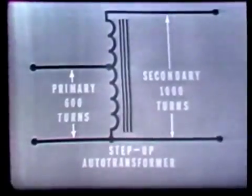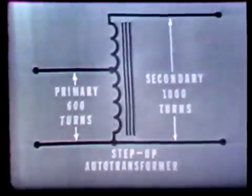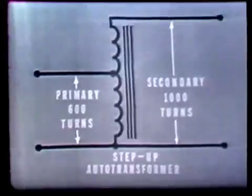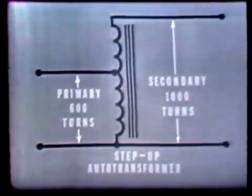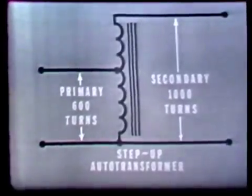A special type of transformer which uses only one winding for both the primary and the secondary coils is the auto transformer. An auto transformer can be used either as a step-up or as a step-down transformer. When used as a step-up transformer, all of the primary winding is part of the secondary winding. Here you see that the winding has a total of 1,000 turns — 600 of these turns serve as the primary while the entire 1,000 turns serve as the secondary.